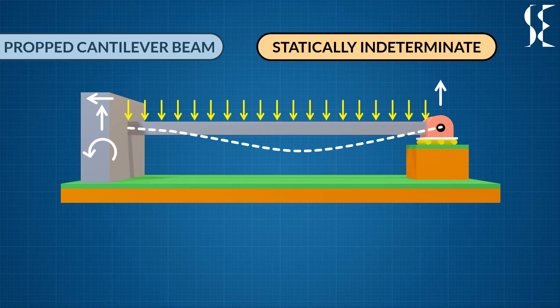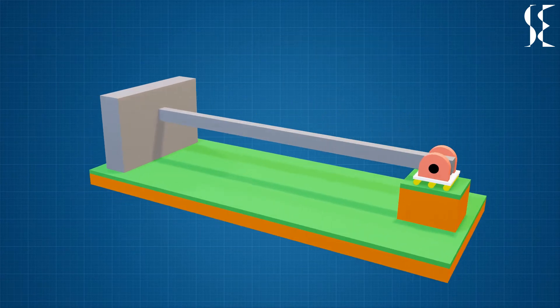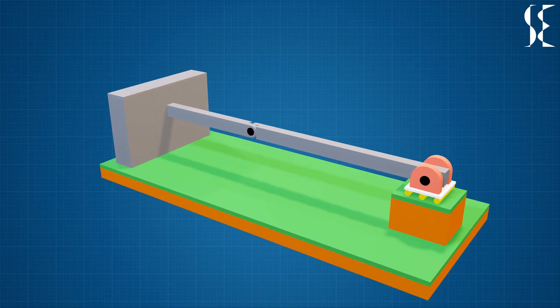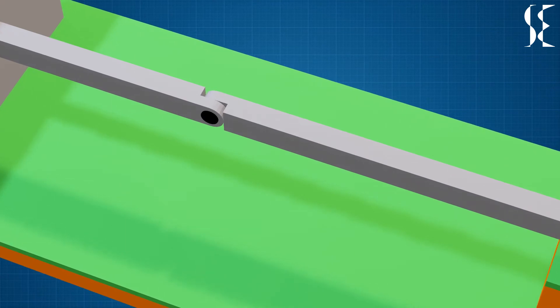But what if I tell you that propped cantilever can be made statically determinate? This can be possible by introducing an internal hinge or pin. Internal hinge allows free rotation hence moment at that point is 0.